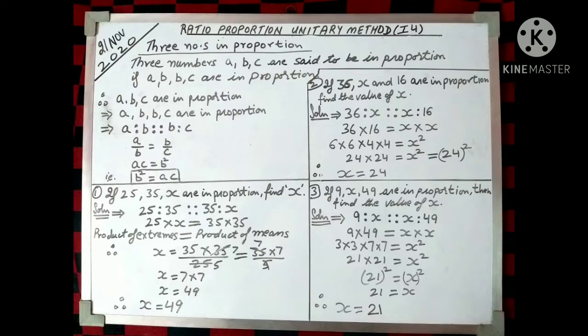See the next one, second one. If 36, x, and 16 are in proportion, then find the value of x. So this time we will write 36, x, x and 16. That is, 36 is to x is equal to x is to 16. Then we will multiply 36 into 16 is equal to x into x. Again the same thing, product of extremes is equal to product of means. So we can write 36 as 6 into 6 and 16 as 4 into 4 and x into x as x square. So we get 24 into 24 is equal to x square is equal to 24 square, which means x is equal to 24. I hope you got it.